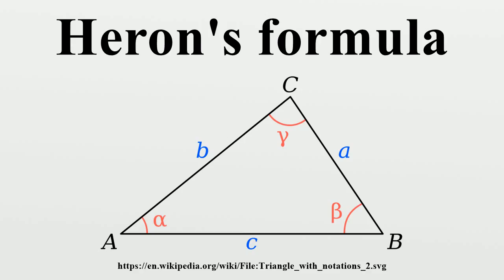A formula equivalent to Heron's was discovered by the Chinese independently of the Greeks. It was published in Shushu Jiuzhang, written by Qin Jiuxiao and published in 1247.